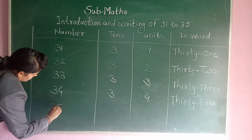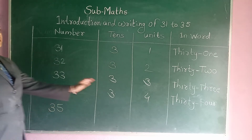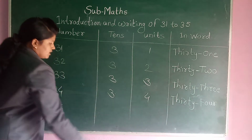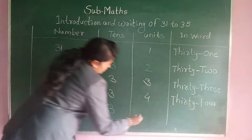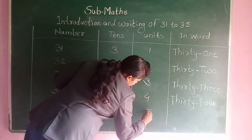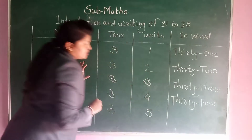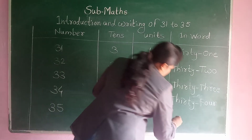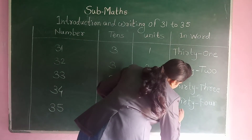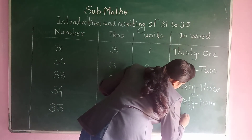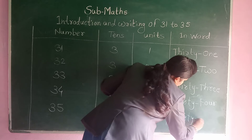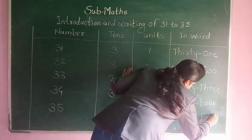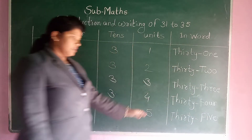Next, last one: 35. So which is tens and which is units? 3 is the tens and 5 is the unit. Okay, and how to write in word: t-h-i-r-t-y, 30, and f-i-v-e — thirty-five.